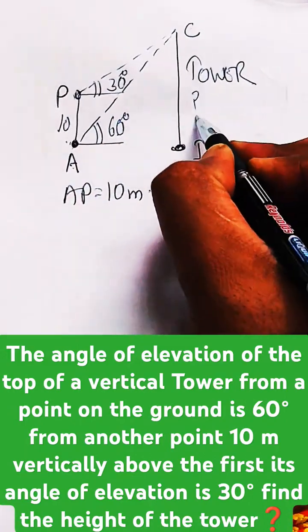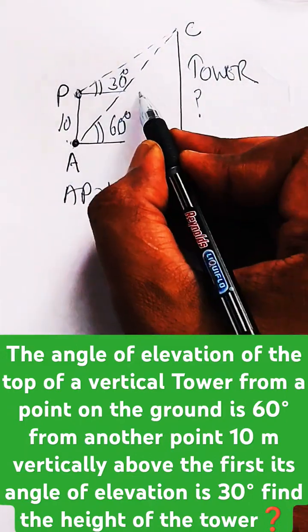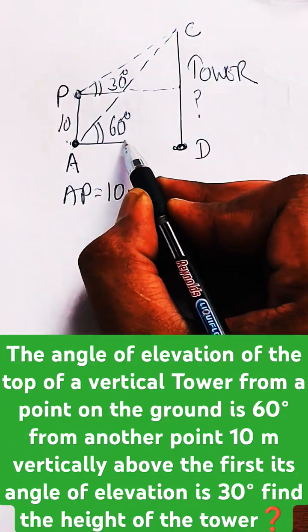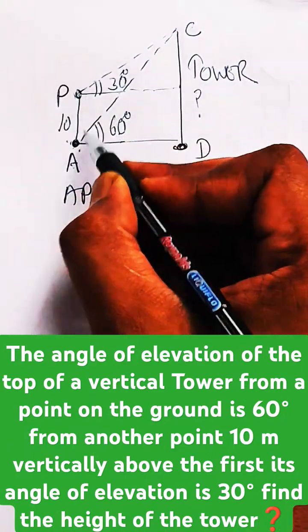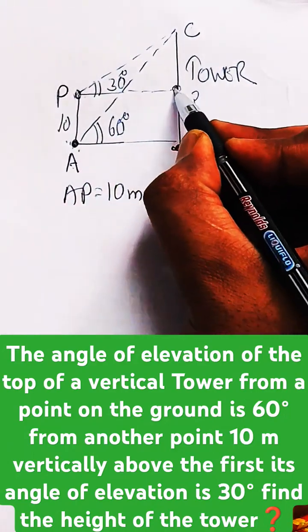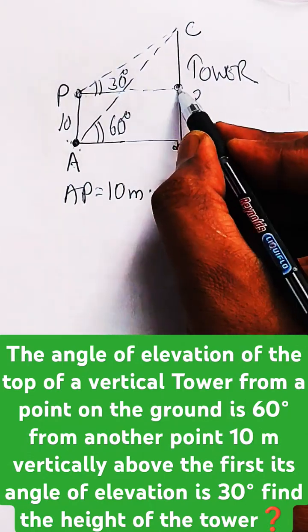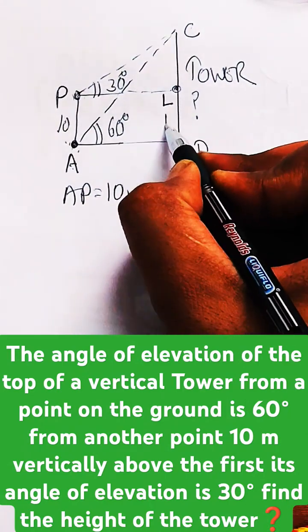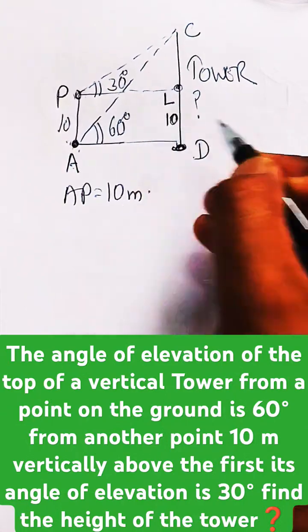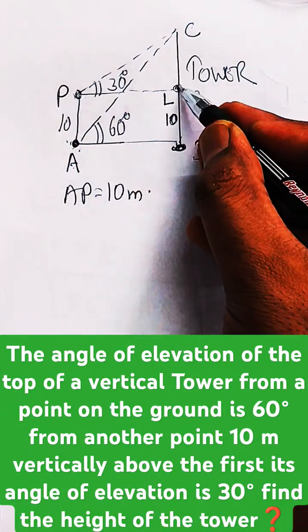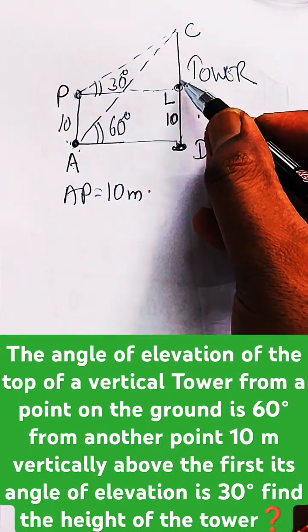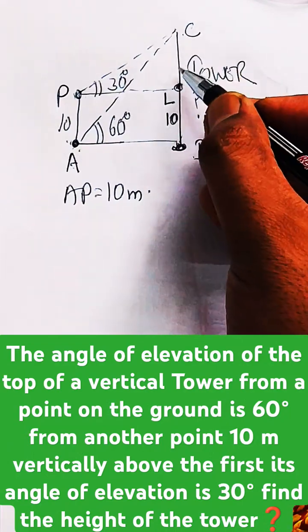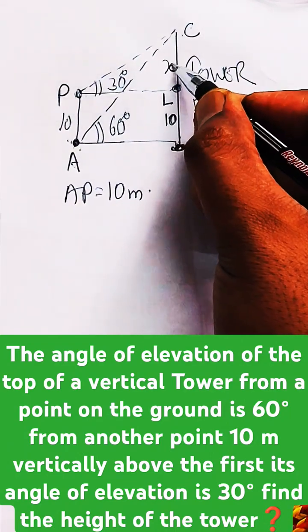Since AP is 10, then definitely the length of DL is also equal to 10, isn't it? DL will be 10, and let's say CL is X.